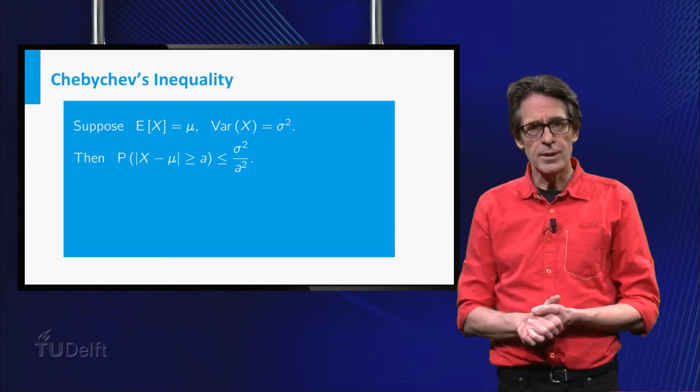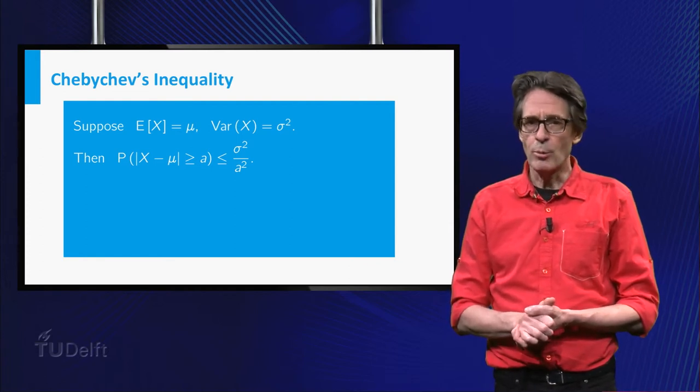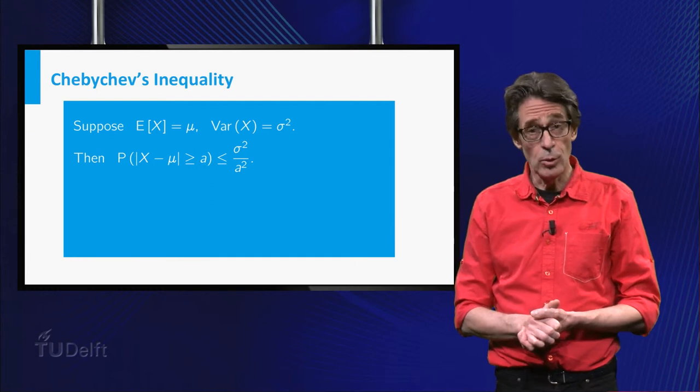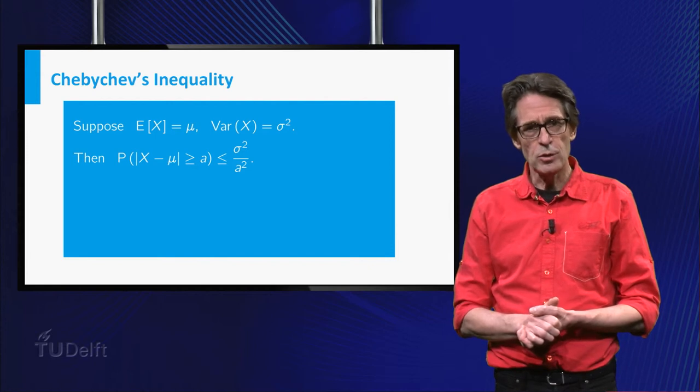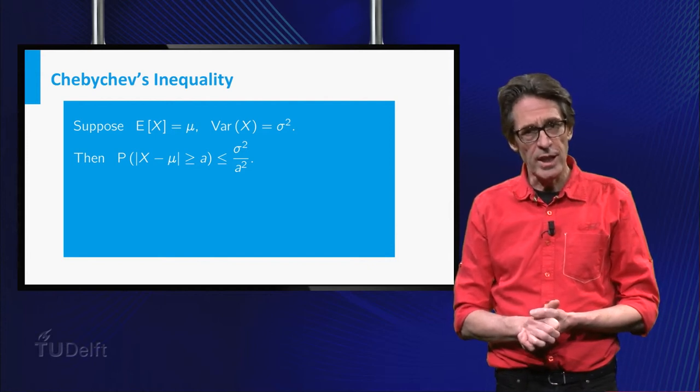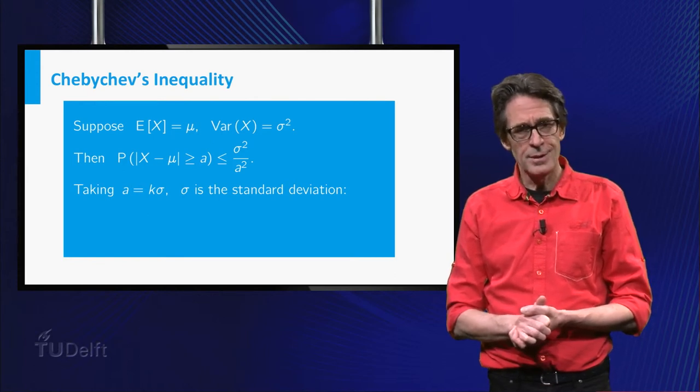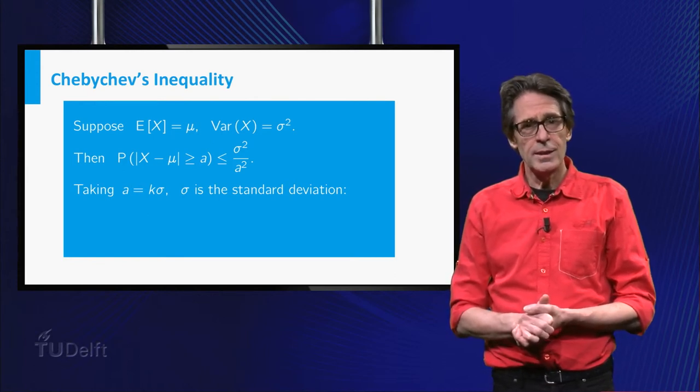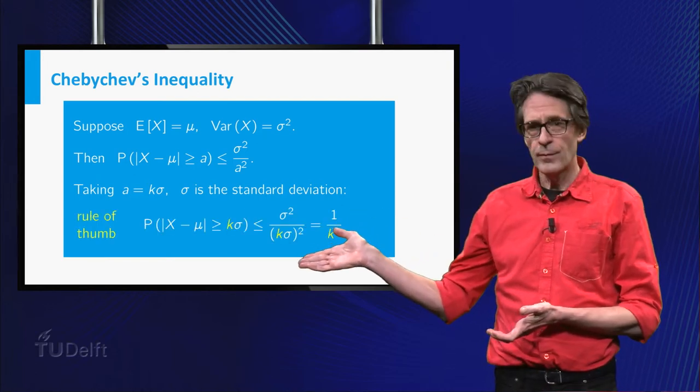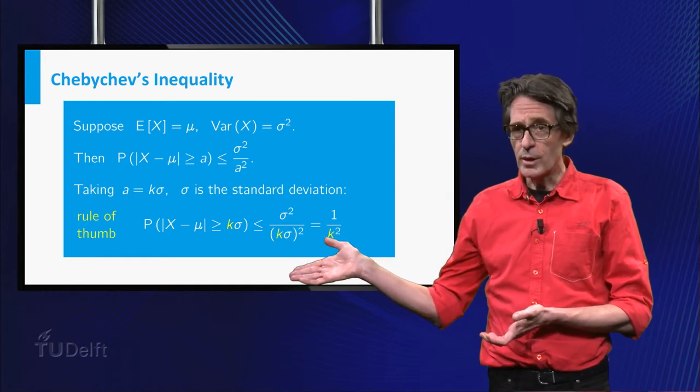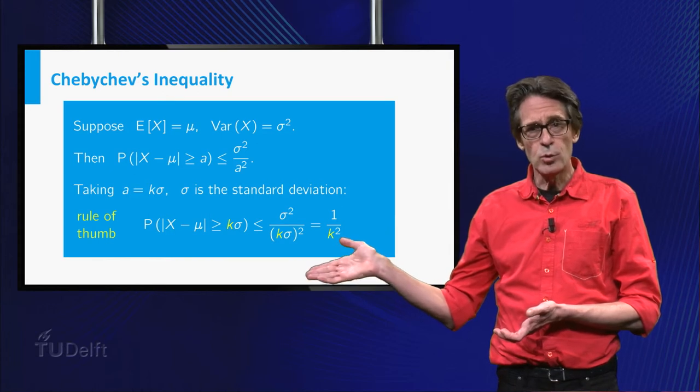This idea is captured in a precise way by the so-called Chebyshev inequality. The probability that X takes on a value that differs more than a from its expectation μ, is less than or equal to the variance of X divided by this distance a squared. When the distance a is expressed in σ, the standard deviation, this gives the following often used rule of thumb. The probability of an outcome more than kσ from the expectation is less than or equal to 1 over k².